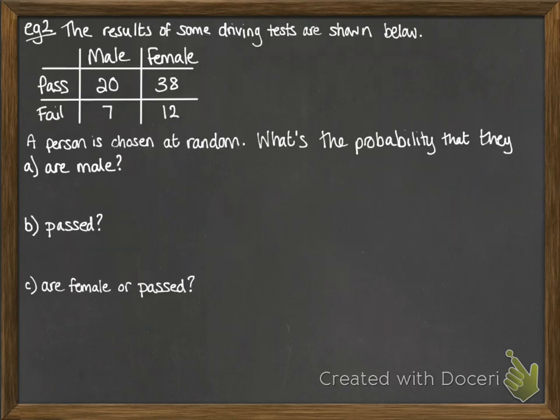Okay, results of some driving tests shown below. We're going to work out some probabilities. So first of all, we need the total. So we've got 77 people in total. The probability that they are male is that section there. So all of the males, whether they passed or failed, came to 27 out of 77 total. And the probability that the person picked at random passed is that section there. So that adds up to 58 out of 77.